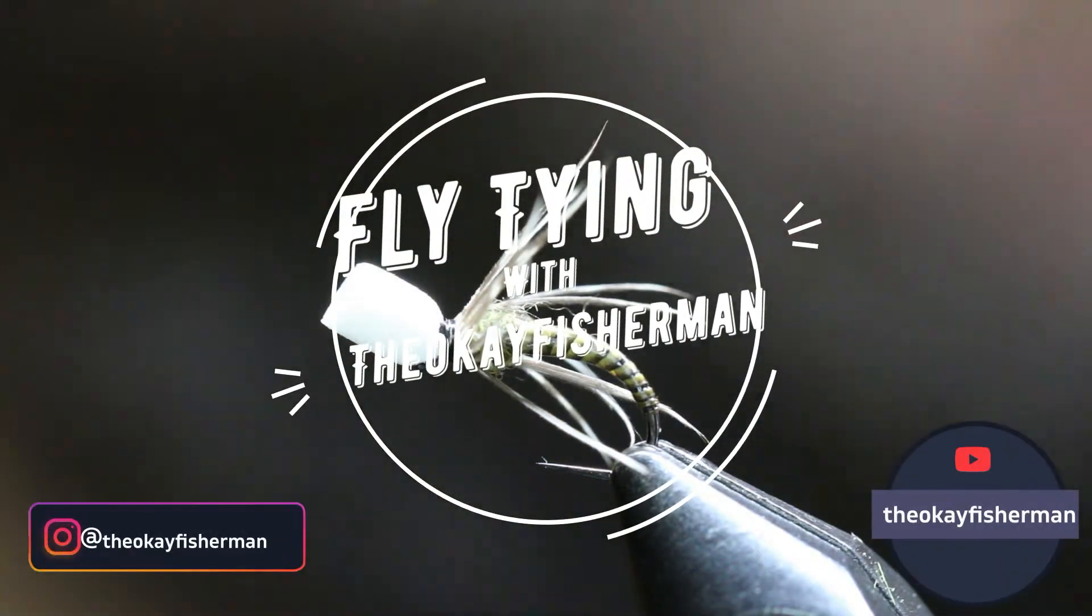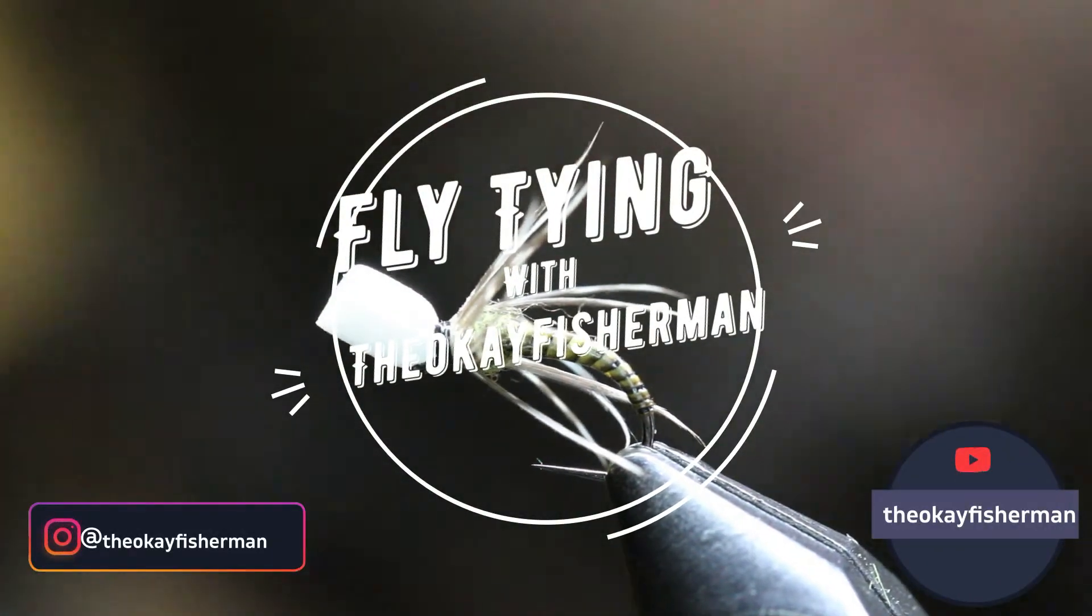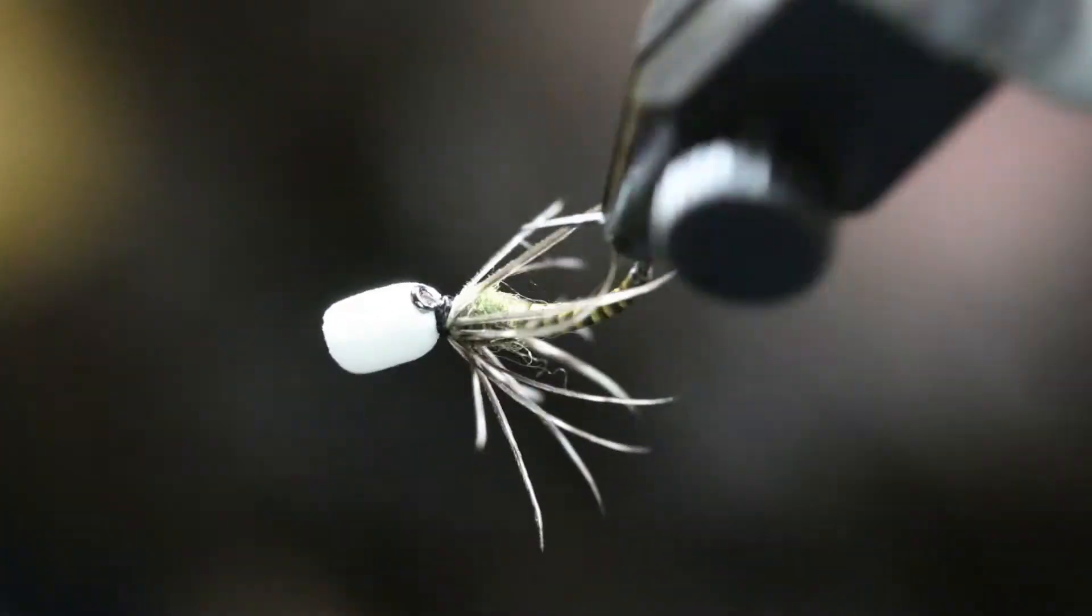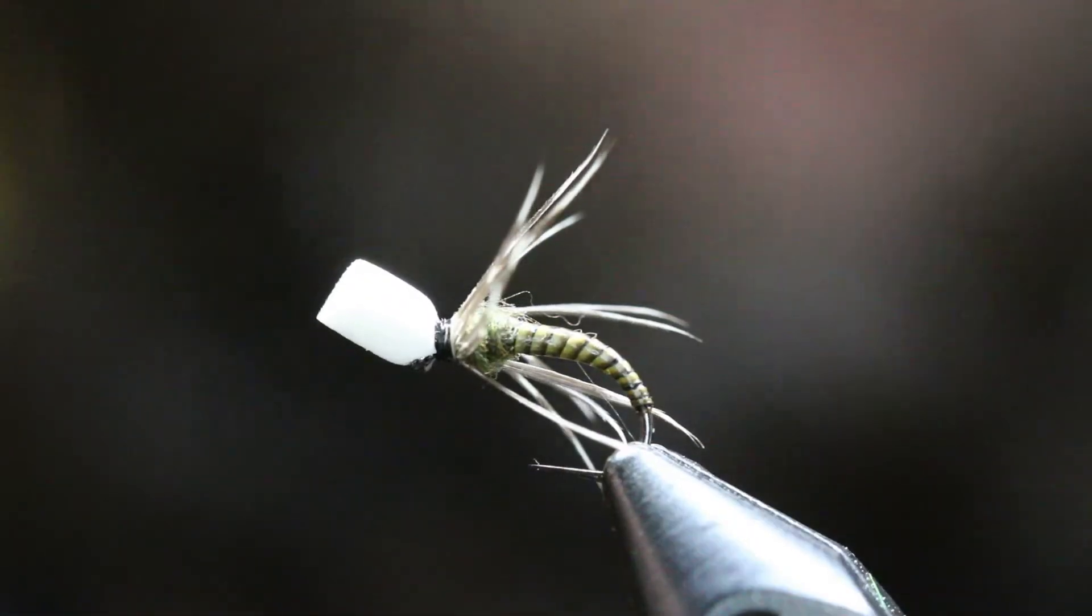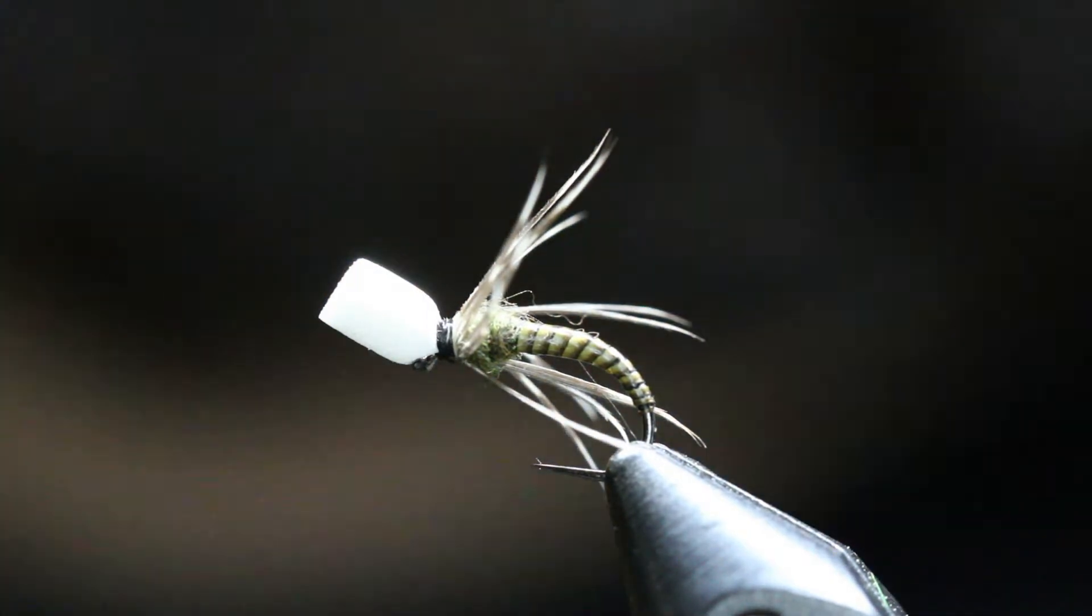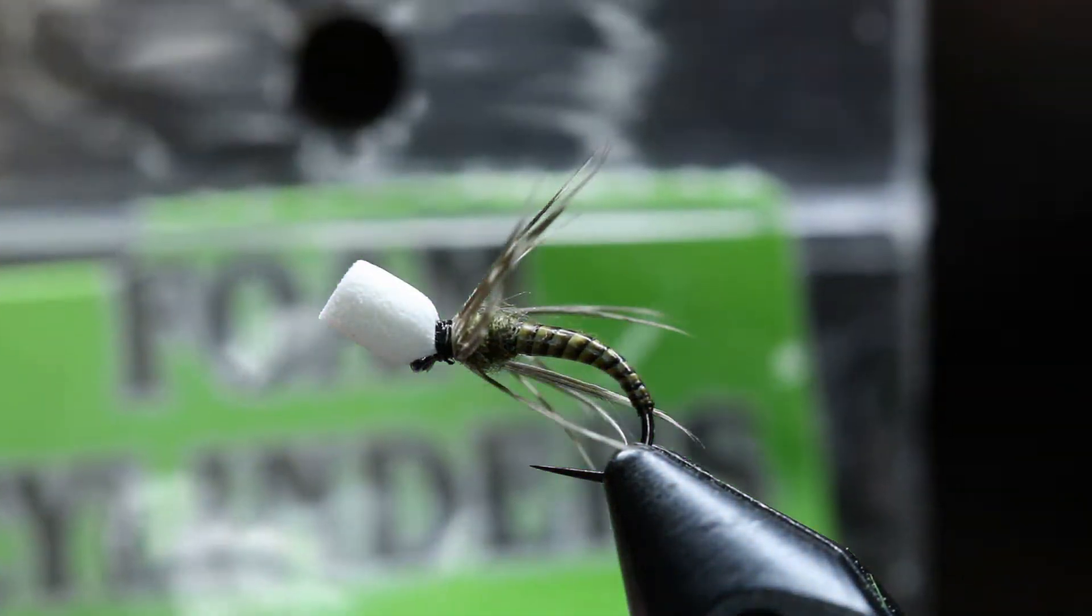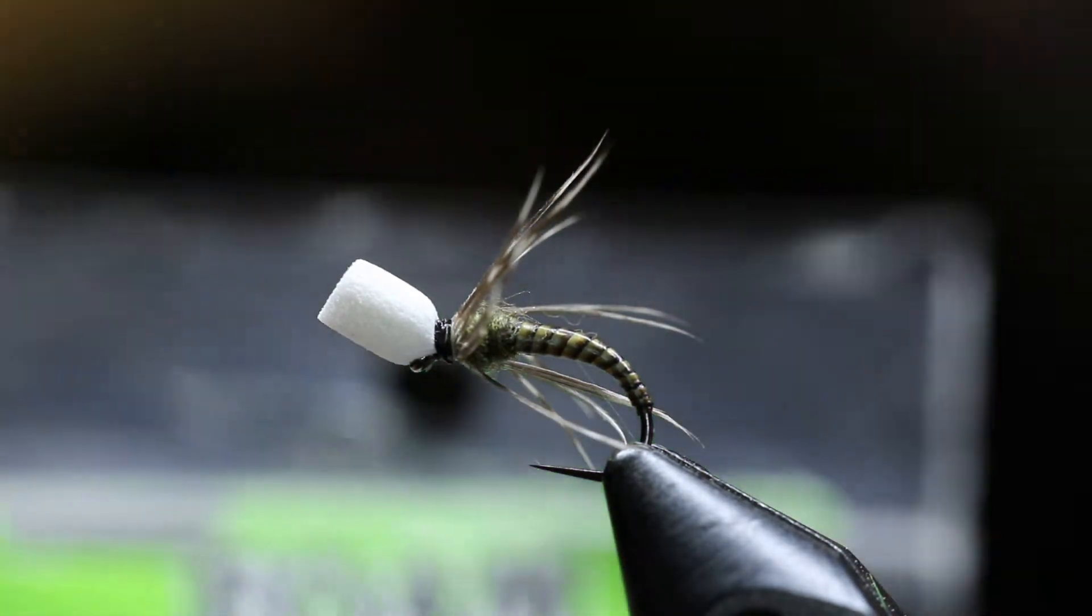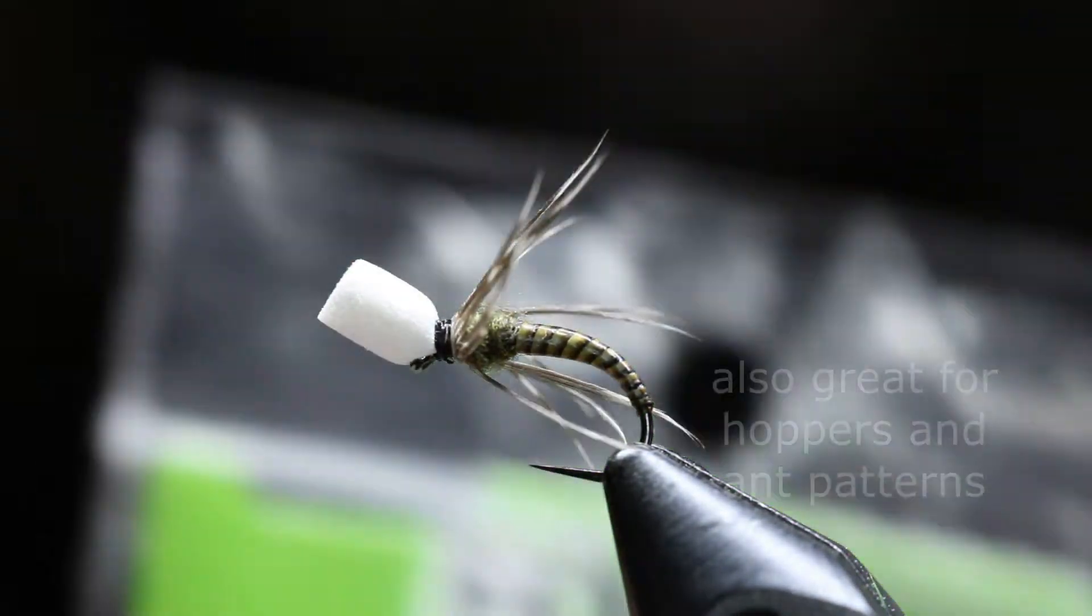Hey everyone, this is the O.K. Fishman with another tutorial. We're going to be doing something a little bit different, more of a how-to on tying in foam cylinders. Super awesome for parachutes or merger patterns.